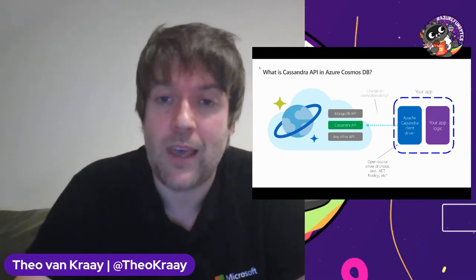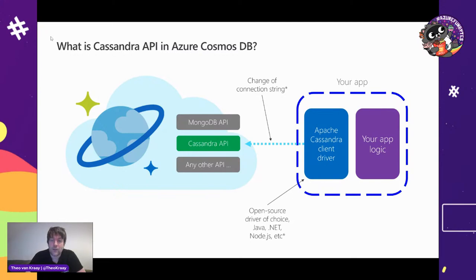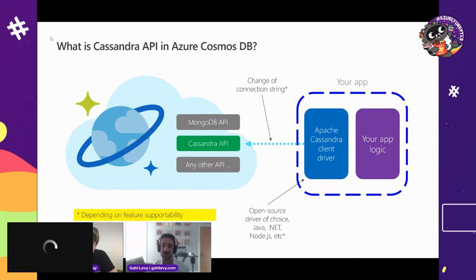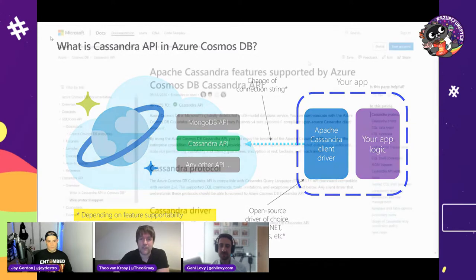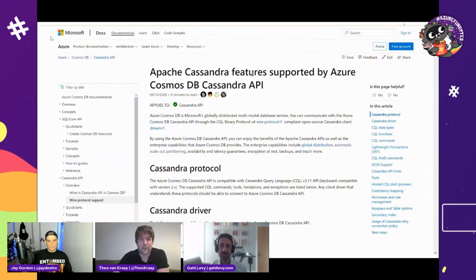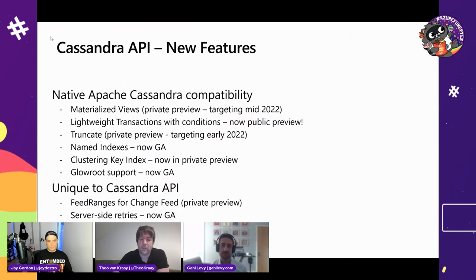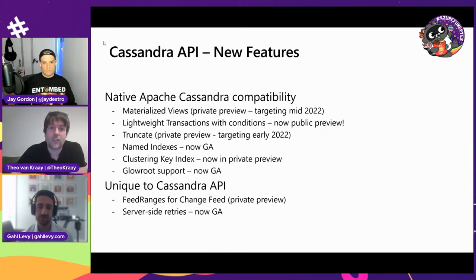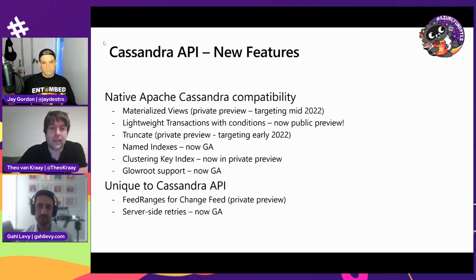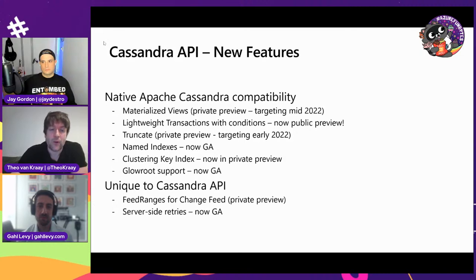That does depend on feature supportability — we don't support 100% of everything you'd expect. We definitely recommend reviewing our docs to see what we support and what we don't. But we're bringing new features all the time — things like materialized views in private preview, lightweight transactions now in public preview, truncate, named indexes, and clustering key indexes in private preview as well.